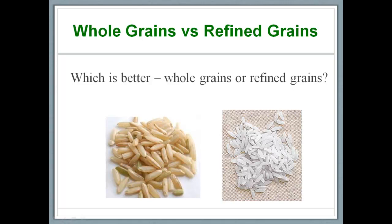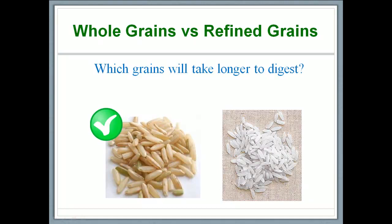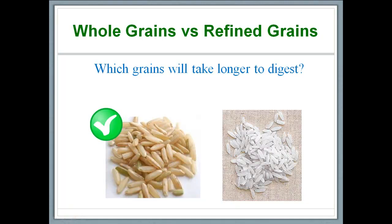Now there is another important reason why whole grains are better than refined grains, and that can be answered by asking: which grains — whole or refined — will take longer to digest? If you said whole grains will take longer to digest, then you are absolutely correct. Bran and fiber in the whole grain will make it more difficult for the digestive enzymes to break down the whole grain into glucose. In refined grain, however, bran and germ have already been removed, and therefore some of the work of the digestive system is done even before the food goes into our mouths.